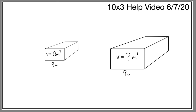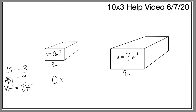Now two cuboids — same process. I want to find the volume of the bigger one given the smaller one's volume. The length scale factor comparing 3 to 9 is 3. The area scale factor is 3 squared which is 9, and the volume scale factor is 3 cubed which is 27. So the calculation is 10 times 27 equals 270 meters cubed. By making every dimension 3 times bigger, the area becomes 9 times bigger and the volume becomes 27 times bigger.